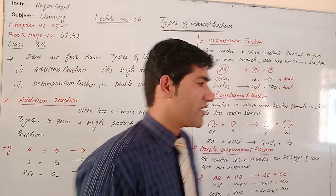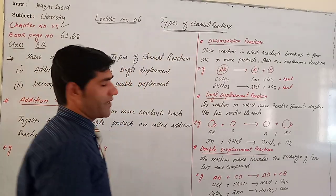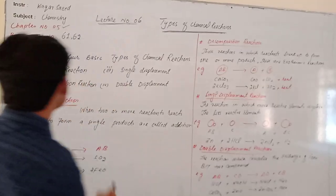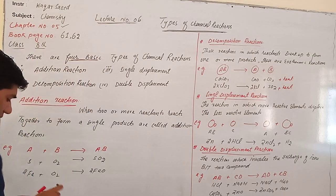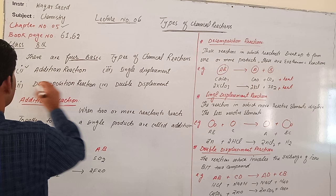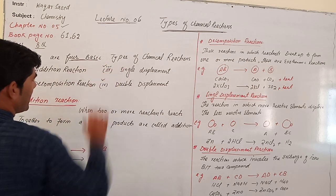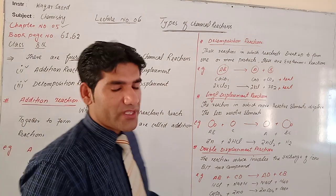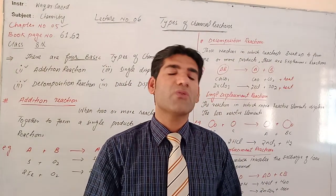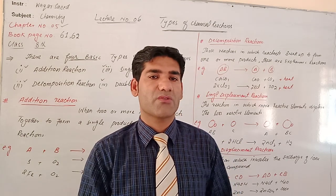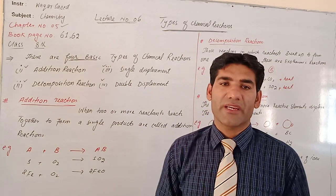Today we will discuss nature number 6: types of chemical reactions. There are 4 basic types of chemical reactions. First is addition reaction, second is decomposition reaction, third is single displacement, and fourth is double displacement. Up to class 8, we have to discuss only these 4 basic types.